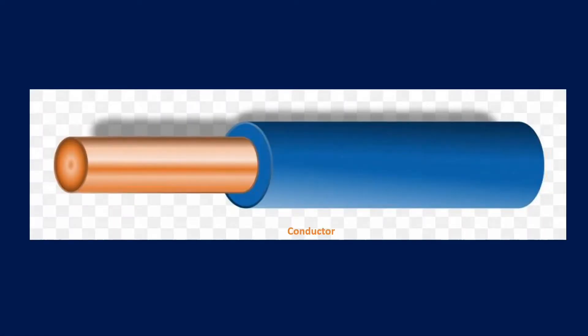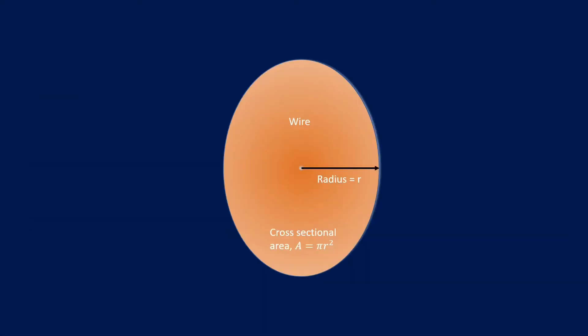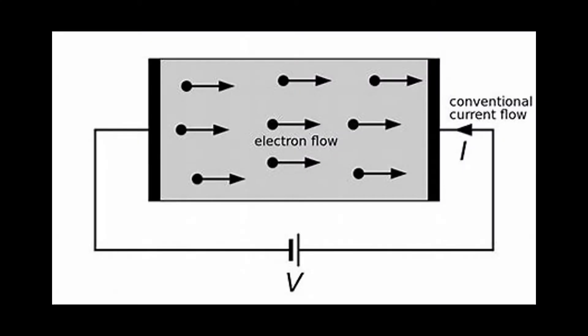Hello everyone, I'm going to talk about the skin effect and the skin depth of a conductor. Let's have a look at what the skin effect of a conductor is. In this picture, we assume this is a conductor — a cut piece of copper wire. It has a cross-sectional area. The total area of the cross-sectional area will be pi r squared, where r is the radius of the cross-sectional area, as it is a round shape.